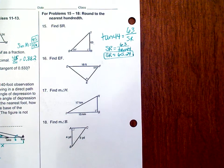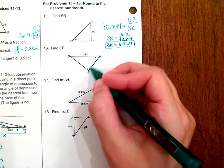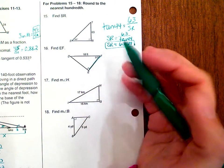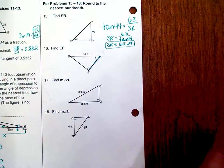Number 16, same thing. We're asked to find the side length, this time EF. This is adjacent to the angle 51, and we're given the hypotenuse, so that's going to be cosine.